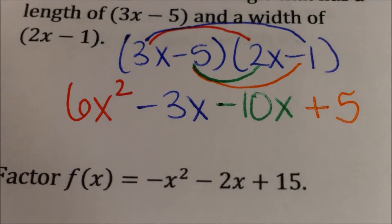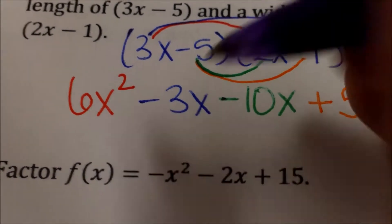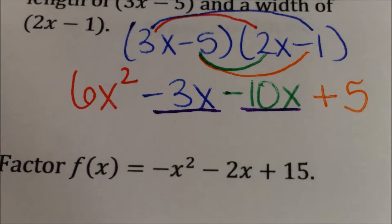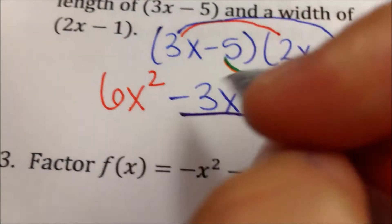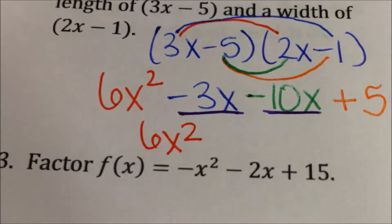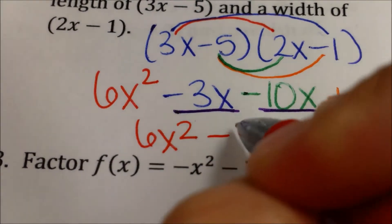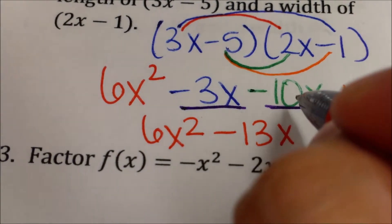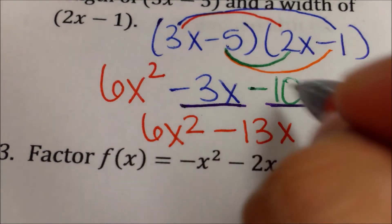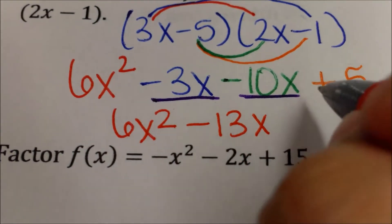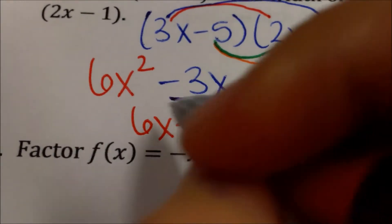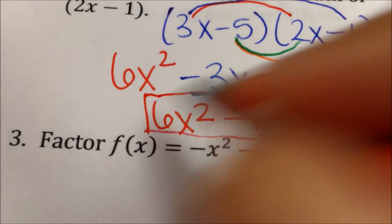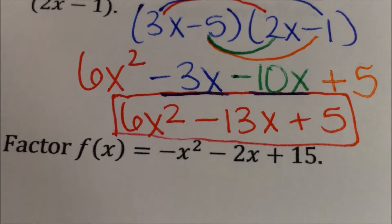Then we combine like terms. Our like terms in this case are the x terms — negative 3x and negative 10x. Since they're the same sign, you are going to add them. The first term stays the same because there's nothing to combine. Negative 3x and negative 10x is negative 13x. I do not put x to the second power because you are just combining like terms — I'm not multiplying, I'm just adding or subtracting, so the exponent stays the same. Plus 5. Remember: when you multiply is when you add exponents. When you combine like terms, the exponent stays the same.